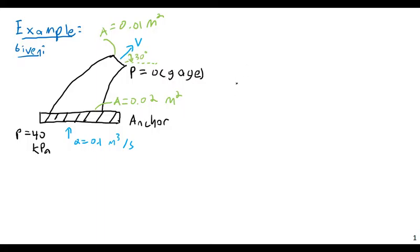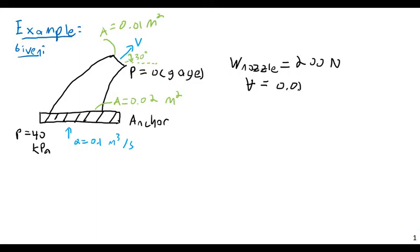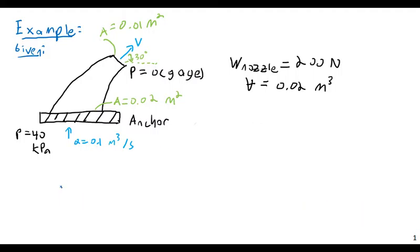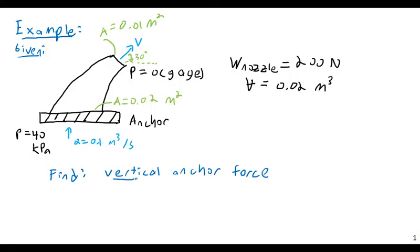The weight of the nozzle itself is 200 newtons. The interior volume of the nozzle is 0.02 cubic meters. I'm not telling you exact dimensions, so we won't look at the horizontal direction. The task is to find the vertical anchor force — the force required to keep this nozzle in place.